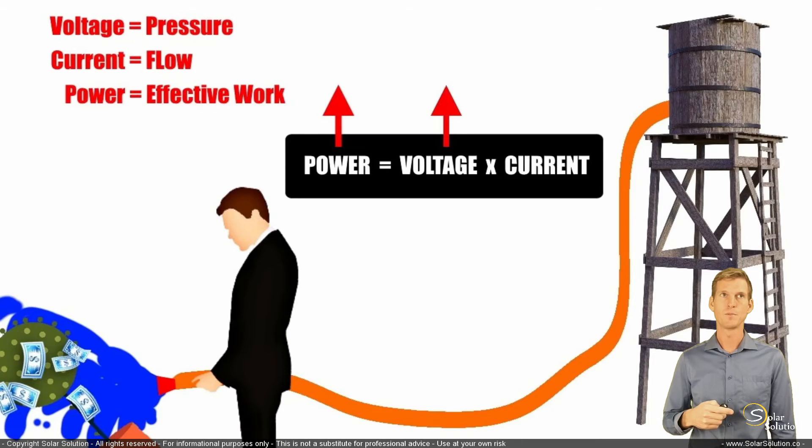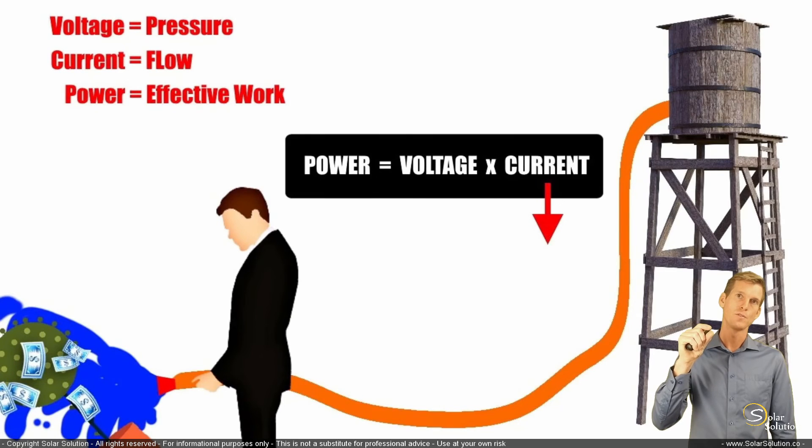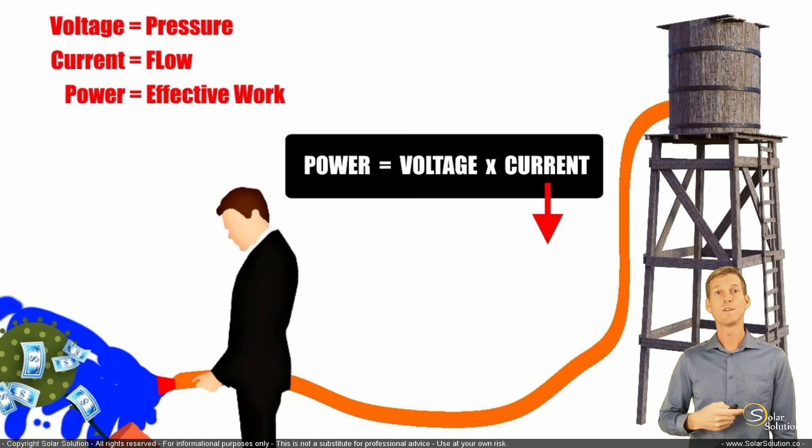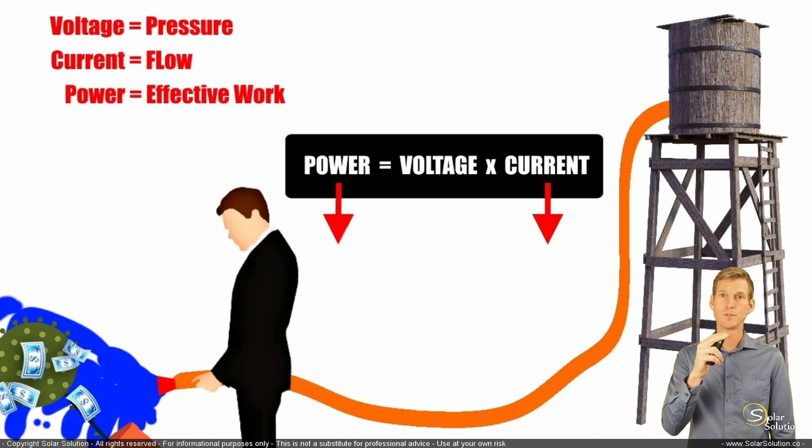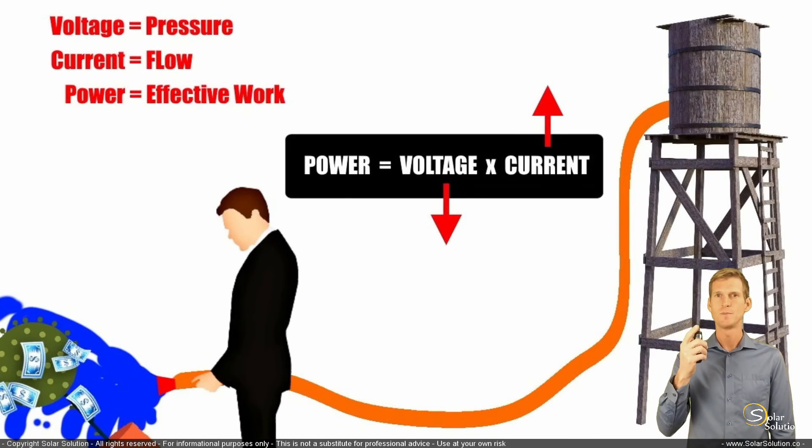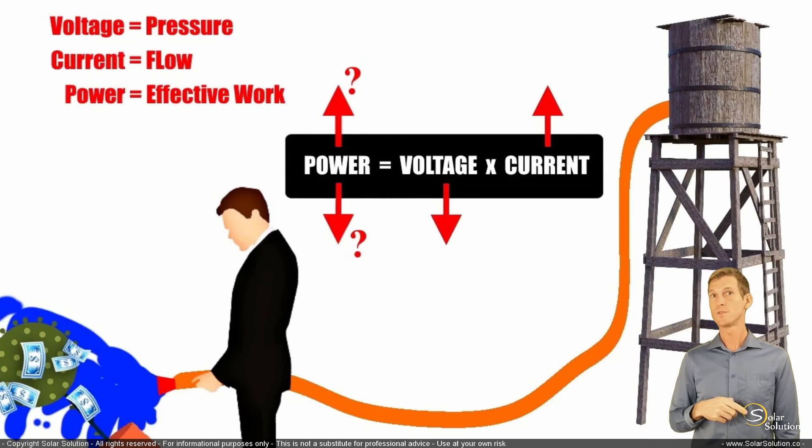Alternatively, if you would, for example, reduce the current, if you would reduce the size of your hose and there's less water flowing through, then you'd also reduce the effective work, so the effective electrical power output of your system. And then if you would change both the voltage and the current at the same time, then it depends what happens. So let's assume your voltage goes down, your current goes up. The power output will also change, but it depends on whether it goes up or down, on how much you have changed the voltage or the current.